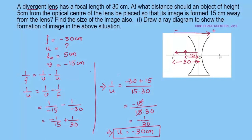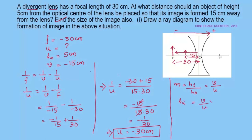This means the object is situated at the focus, so here is our object at 30 centimeter. Next we find the size of the image using the magnification formula: m equals h_i by h_o equals v by u. So h_i equals v by u multiplied by h_o. With v as minus 15, u as minus 30, and h_o as 5, we get 5 by 2, which is 2.5. So the height of the image is 2.5 centimeter.